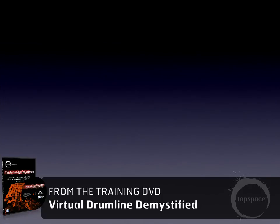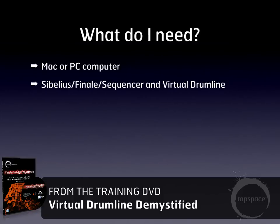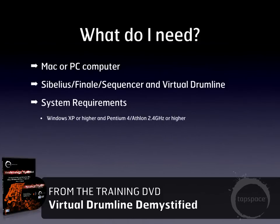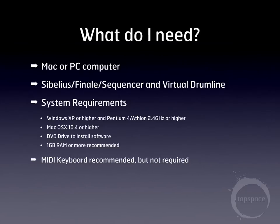The last thing I want to cover before moving on is what you need to use Virtual Drumline 2.5. The first and obvious thing is some sort of computer. You'll also need a host — namely Sibelius, Finale, or a sequencer or digital audio workstation — and Virtual Drumline, obviously. As for system requirements: Windows XP or higher, Mac OS 10.4 or higher, a DVD drive to install the software, and one gigabyte of RAM or more is recommended — though I would suggest at least two, depending on the project size. A MIDI keyboard is highly recommended but not required, and when we get into the Finale and Sibelius videos you'll see how beneficial they are.